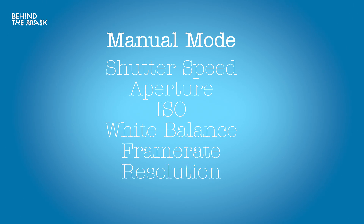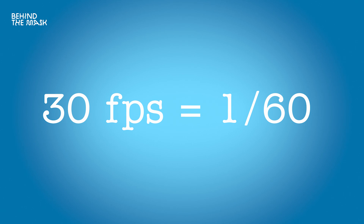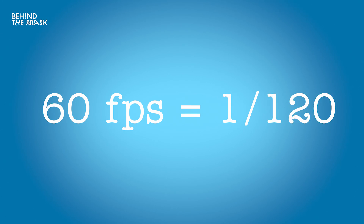We'll get to all of these settings in the future and how they are all connected to each other. Now let's get back to how to set the proper shutter speed. With a frame rate of 25 frames per second, your shutter speed should be 1/50th of a second. If you're filming at 30 frames a second, it should be 1/60th of a second. And if you're filming at 60 frames a second, it should be 1/120th of a second.